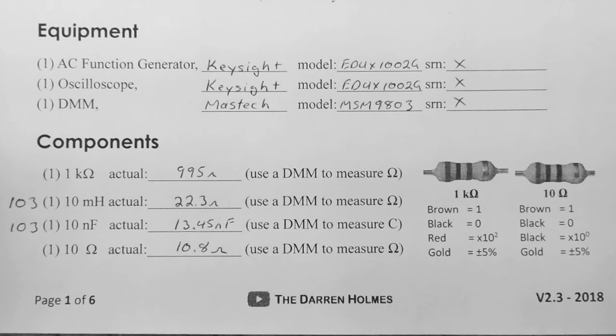Under Equipment, we're going to use the Keysight EDUX-1002G oscilloscope, which has the built-in function generator. Our DMM is the Mastec MSM9803. We're not going to bother with the serial numbers because we're never going to come back and try to repeat this experiment with the same equipment, so they're hard to find.